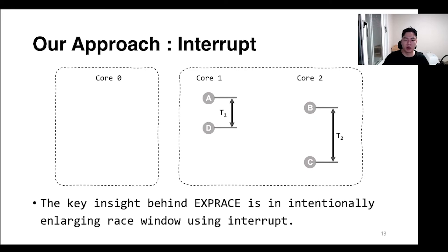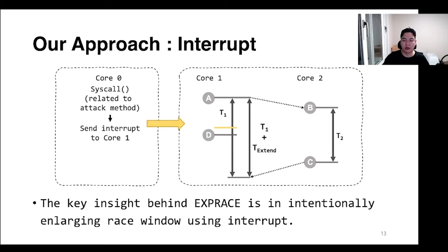Let's see how the attack works as a whole. There are two threads, core 1 and core 2, and they race infinitely. At that time, if core 0 sends an interrupt to core 1 and that interrupt is delivered during T1, the kernel stops running and executes the interrupt handler first. So T1 is enlarged more than T2, and the exploit will succeed.